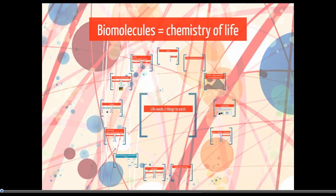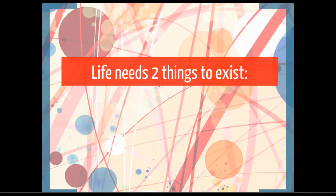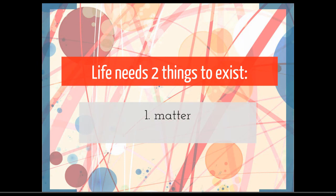In this lecture, we're going to introduce the basic chemistry of life. Even though biologists don't usually want to admit it, biology is really just chemistry, very complicated, put into fantastic ways that get up and walk around and interact. But we do need to understand some of the basic building blocks to understand how we build living systems. Life needs two things to exist: matter and energy.